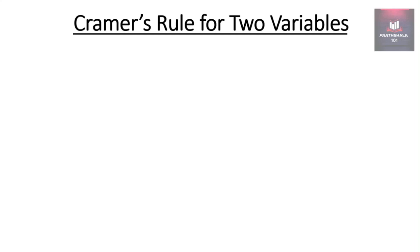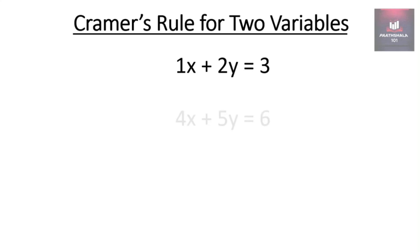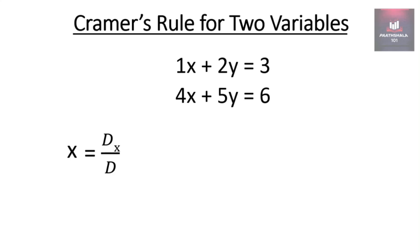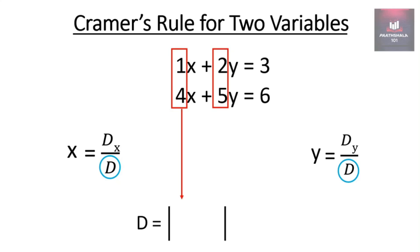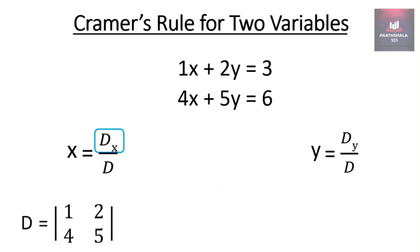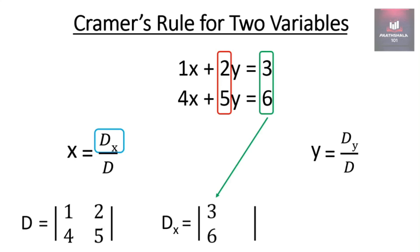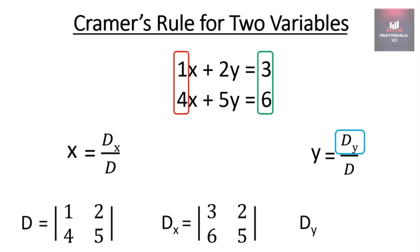Now let us understand with the help of an example. Let the two equations be x + 2y = 3 and 4x + 5y = 6. For finding x: x = Dx/D and y = Dy/D. D equals the determinant of x-coefficients 1 and 4, and y-coefficients 2 and 5. Dx equals the determinant of constants 3 and 6, and y-coefficients 2 and 5. Dy equals the determinant of x-coefficients 1 and 4, and constants 3 and 6.